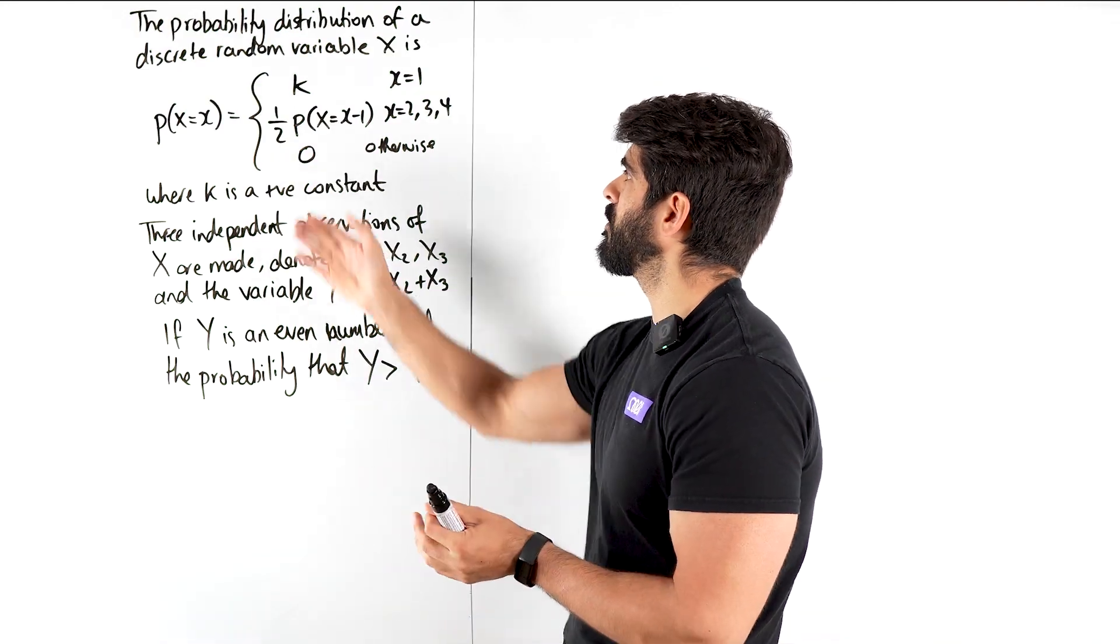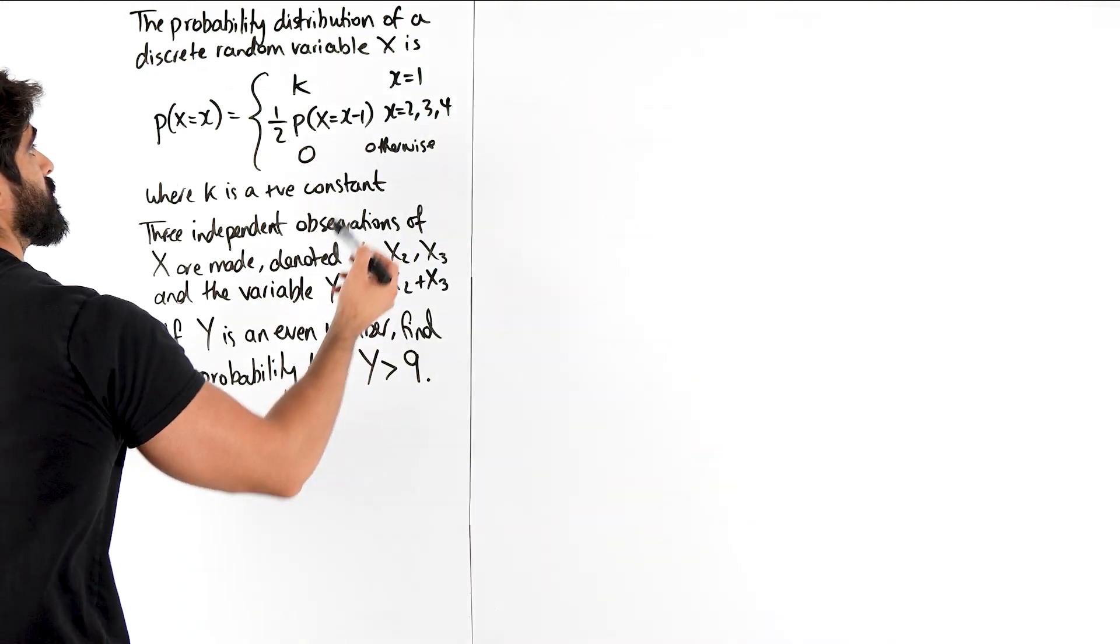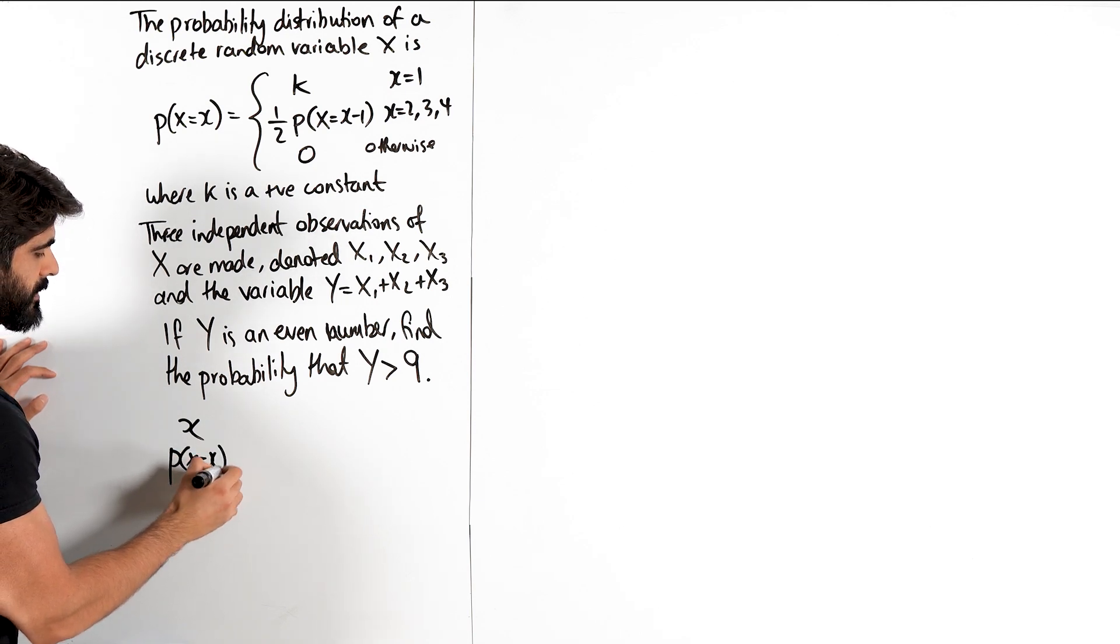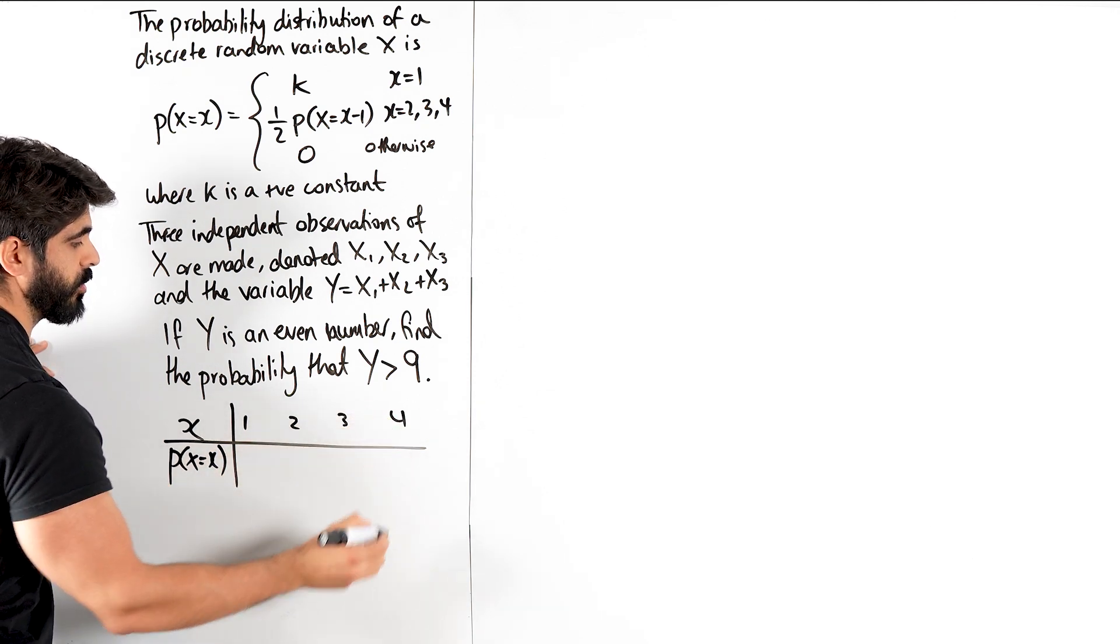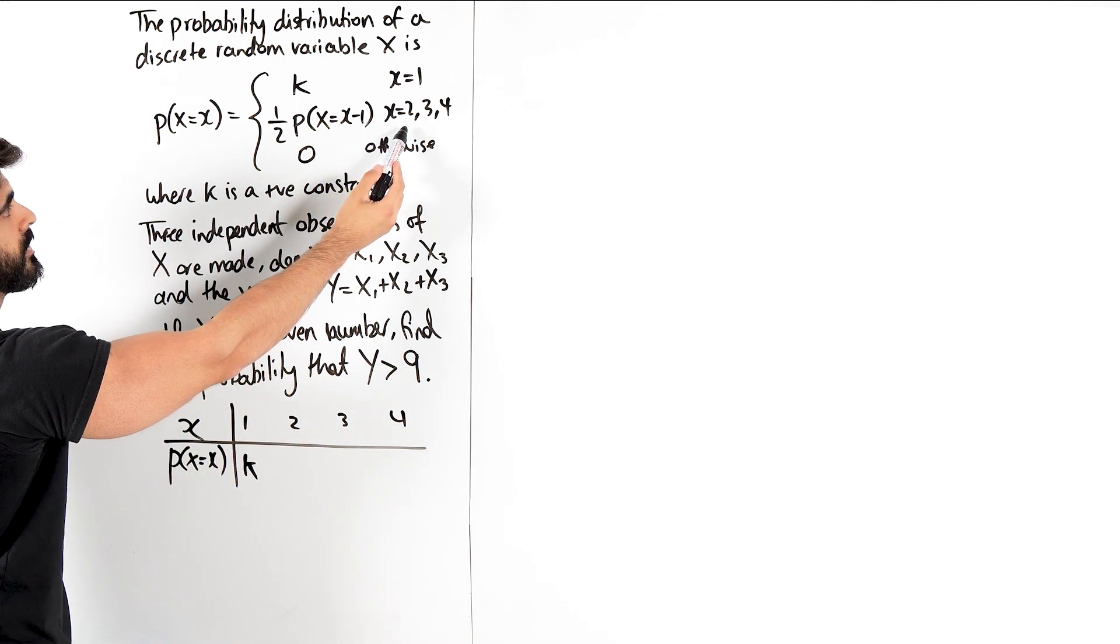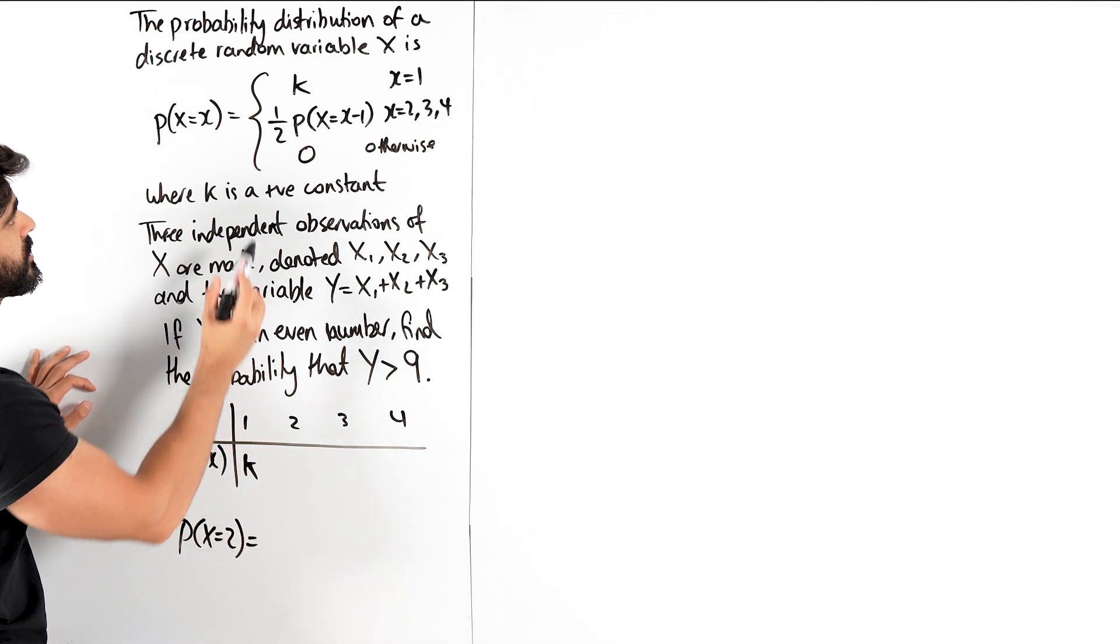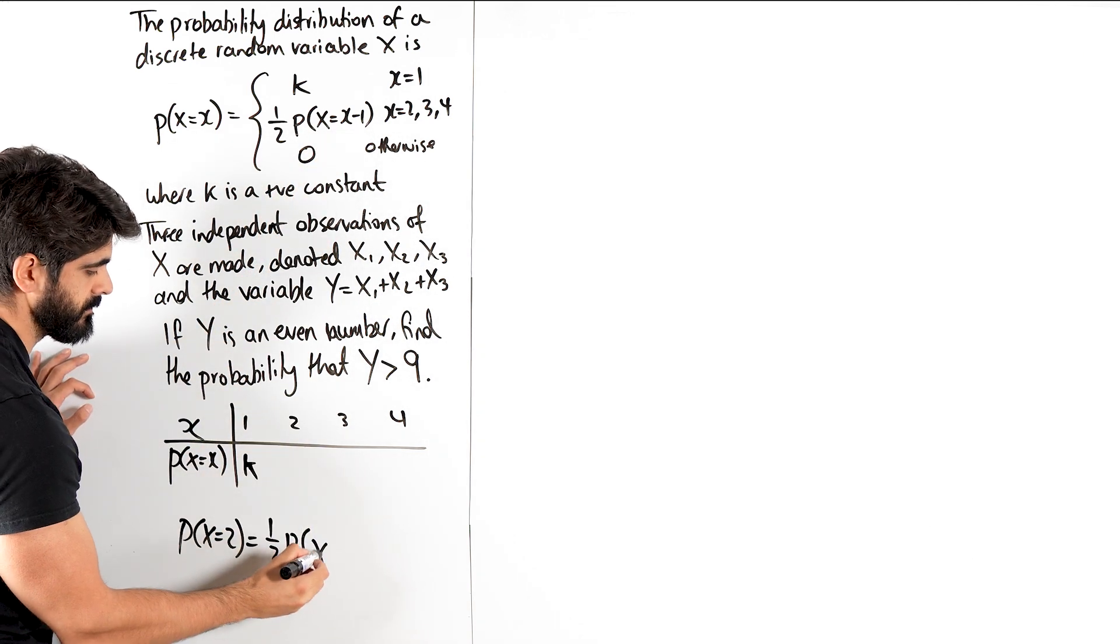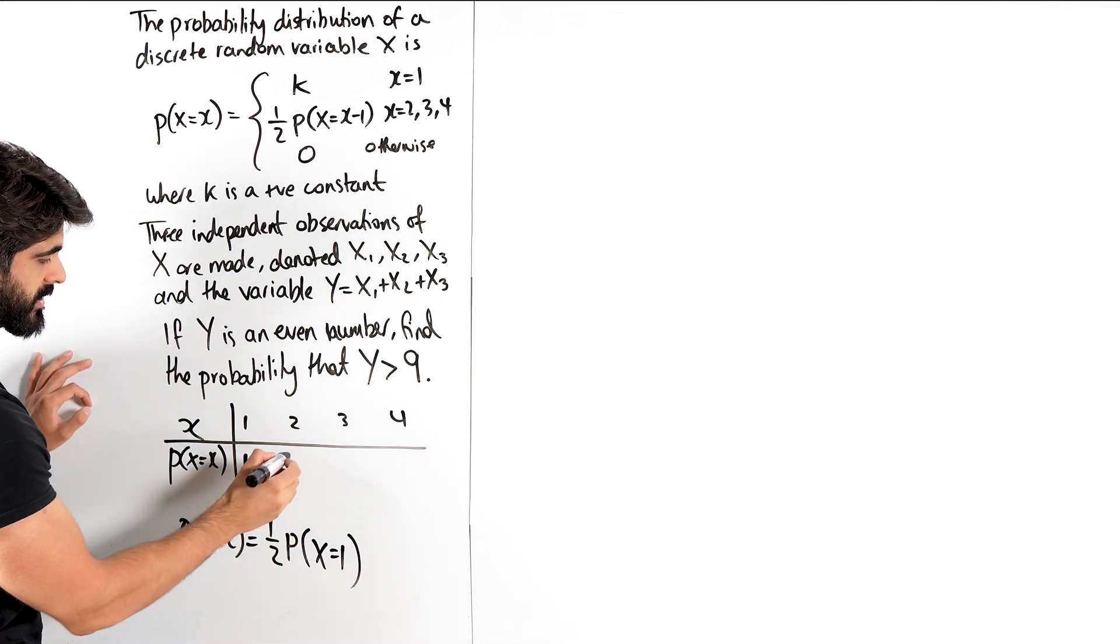So obviously we're going to have to find out what these individual probabilities are, and the way we do that is we form a table. The table is going from 1 to 4, so we have x and those associated probabilities. When x is 1, we just get k. When x is 2, the probability that x is 2 is a half of the probability that x equals 2 minus 1, which is 1. So you're just halving the previous probability, so that's a half k. For the probability that x is 3, we do a half of the probability that x equals 2. The probability of 2 is this, so when you half that, you get a quarter. And this will be 1 over 8.